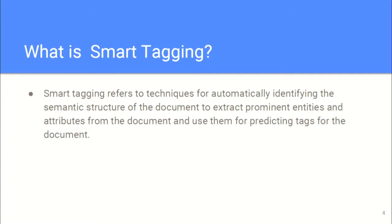We want to avoid all of this, so we plan on automating the whole tagging system. We plan this as an extension for the Sunbird platform. What exactly smart tagging is: basically we try to identify the semantic structure that each individual content has, and then we try to predict what tags it can hold. So for each video we try to convert it into a text document, and then we try to predict — this may be related to theory, this may be related to artificial intelligence, this may be related to programming.